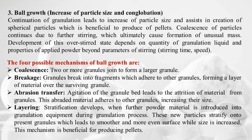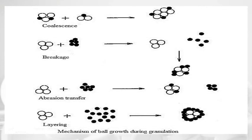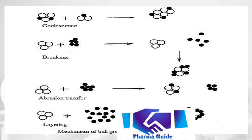The figure illustrates mechanism of ball growth during granulation: coalescence (two or more granules join), breakage (granule fragments adhere to another granule), abrasion transfer (abraded material adheres to another granule), and layering (further powder addition stratifies onto present granules for smoother surface). The layering mechanism is beneficial for formation of pellets.